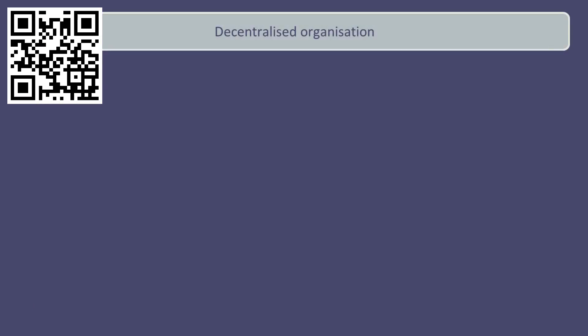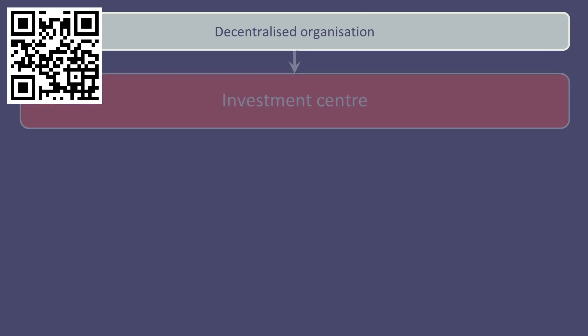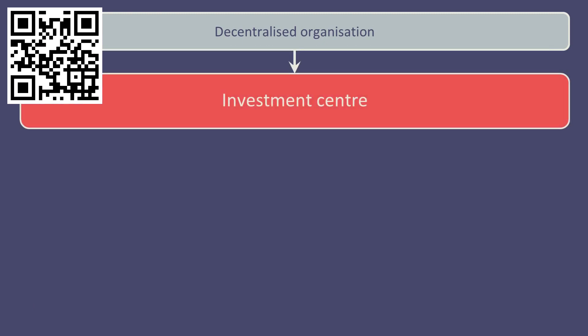In a decentralised organisation, divisional structures can exist. A division can also be referred to as an investment centre, where the division manager has responsibility over revenue, costs, and capital expenditure or investment. It is common for a division to set financial targets and for its performance to be assessed accordingly.